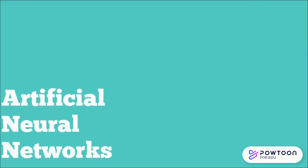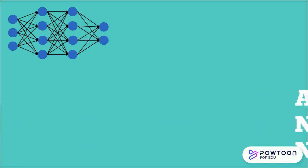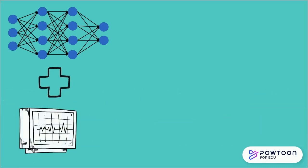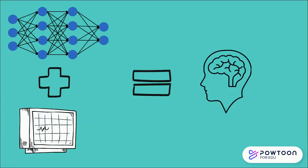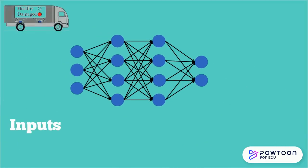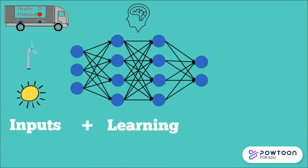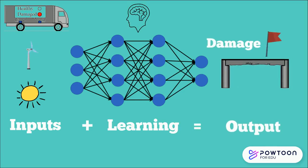My research focuses on the development of artificial neural networks which essentially mimic the learning process which the human brain uses to remember and recognise patterns. A well-trained neural network should be able to predict how a bridge would behave under various conditions and hence gives much better insight into whether changes in behaviour are actually caused by damage or deterioration.